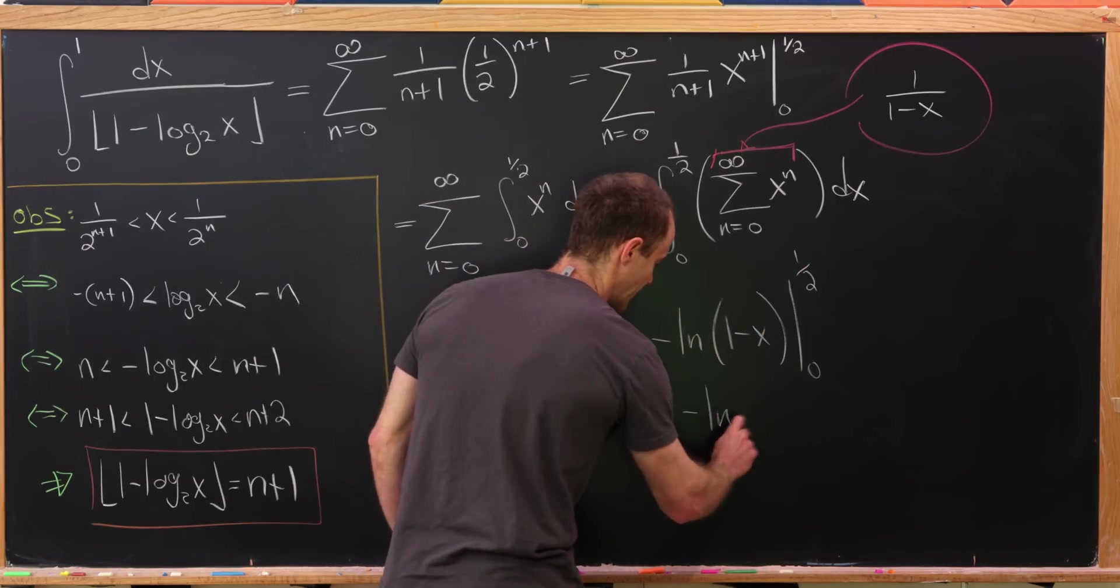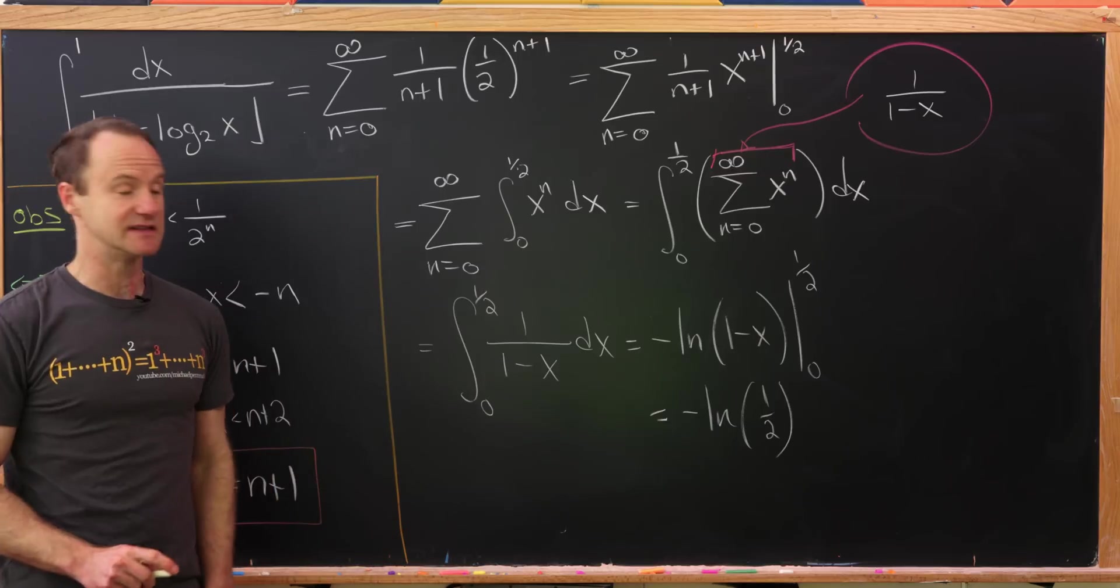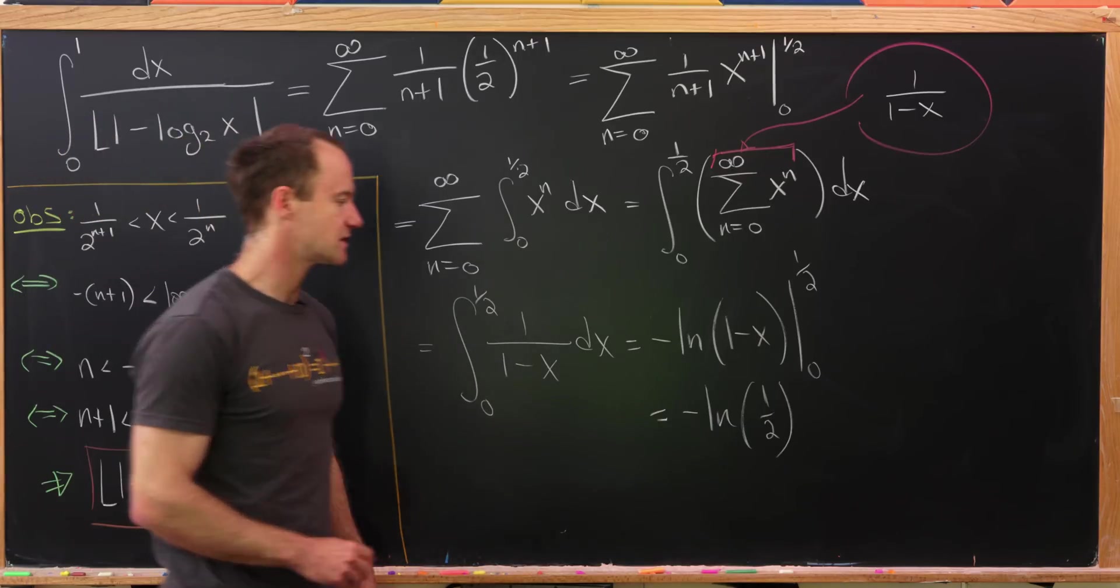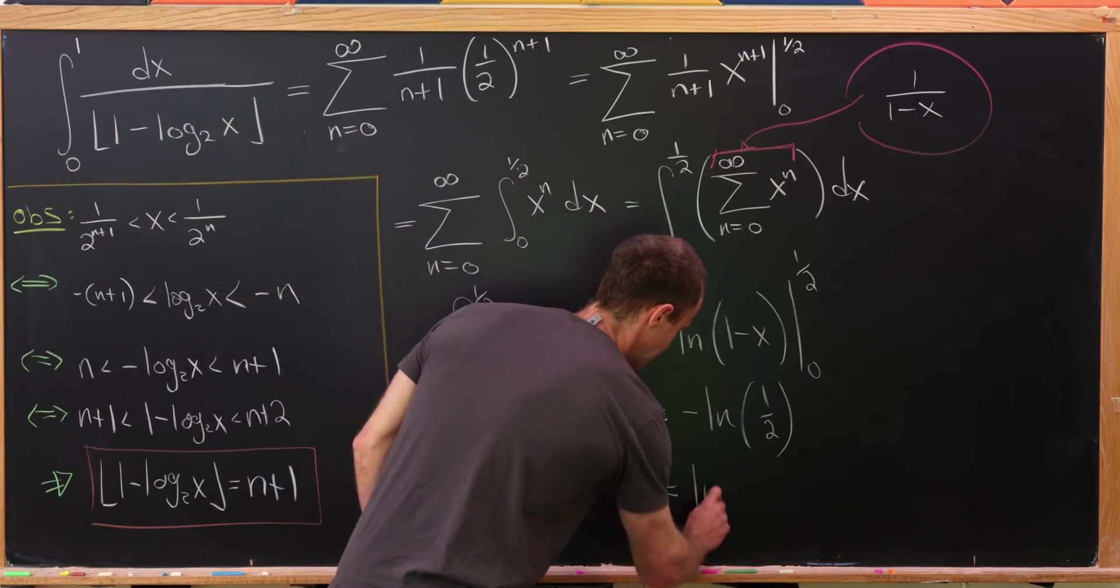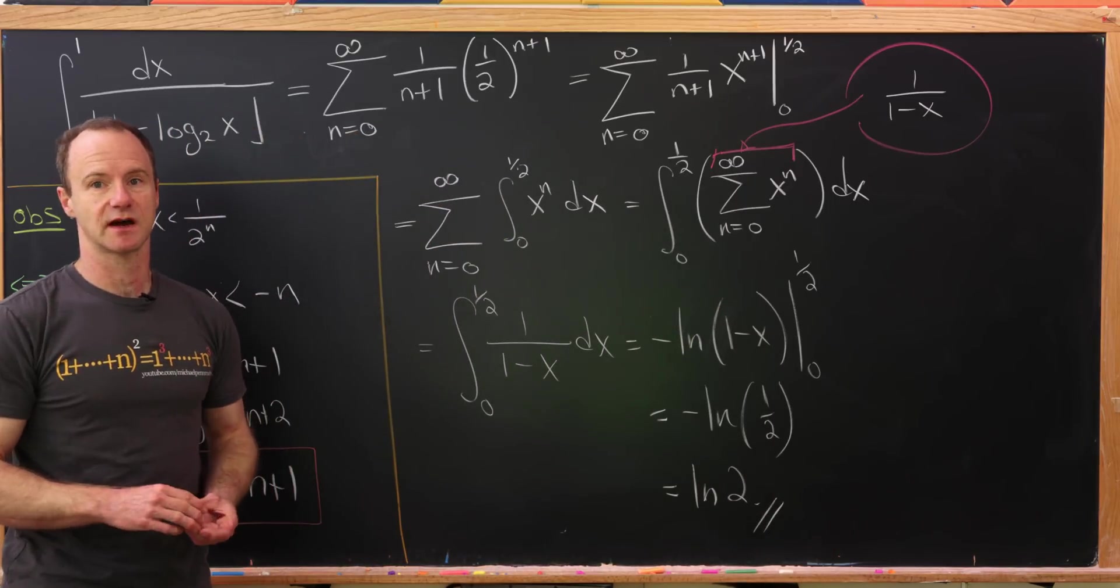So evaluating it at 1 half, we get minus natural log of 1 half. Evaluating it at 0, we get natural log of 1, which is 0. But now using logarithms, we can very simply reduce this to the natural log of 2. And that's a good place to stop.